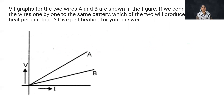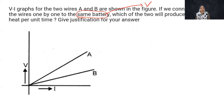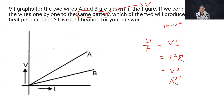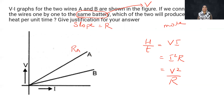The V-I graph of two metallic wires A and B are shown in the figure. If we connect both wires one by one to the same battery — which means the same potential difference — which of the two will produce more heat per unit time? We have the heat equations: V·I, I²R, and V²/R. Slope of V-I graph equals resistance — higher the slope, higher the resistance. So resistance of A is greater than resistance of B.